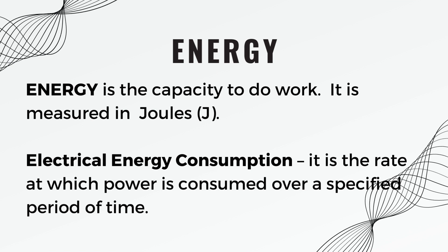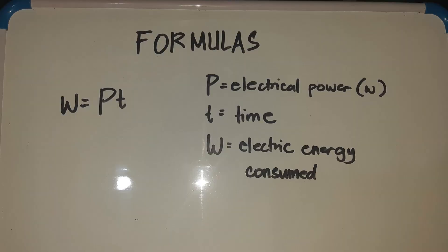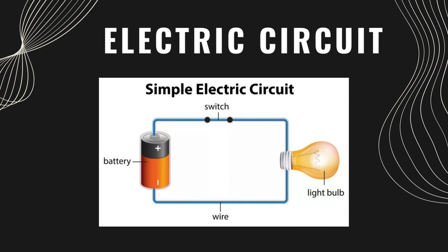Energy is the capacity to do work, measured in joules. Electrical energy consumption is the rate at which power is consumed over a specific period of time. The formula for electric energy consumed is W = P × t, where P is electrical power in watts, t is time, and W is electric energy consumed.